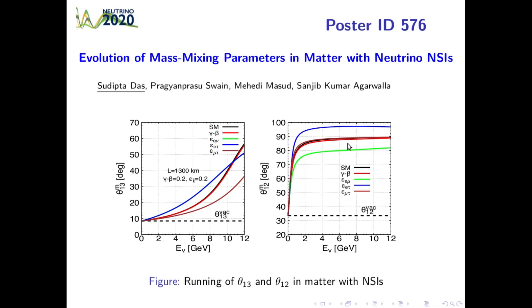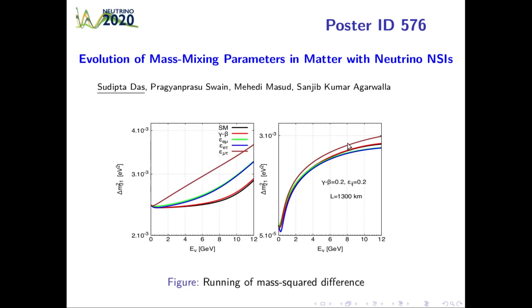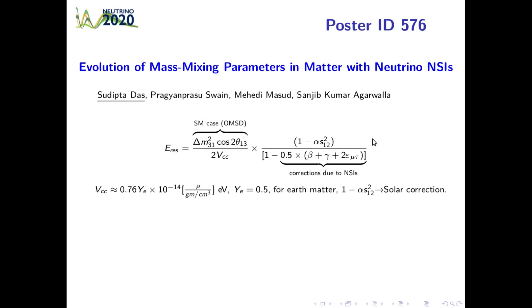In case of evolution of mass squared differences, it is observed that the solar mass squared difference increases rapidly both in case of standard model and in presence of NSI. We also observed corrections in the theta_13 resonance conditions due to presence of non-standard interactions.